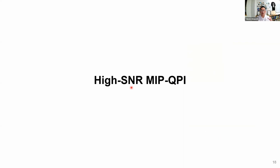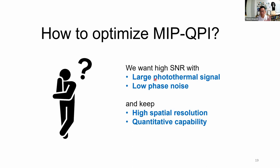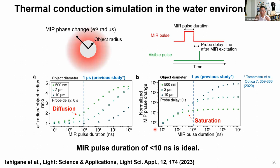Next, I'll discuss how to improve the SNR of the mid-infrared QPI technique. We want higher SNR with large photothermal signal and low phase noise, while keeping high spatial resolution and quantitative capability. To find the optimal condition, we performed thermal conduction simulations. We assumed small objects of 500 nm, 2 μm, and 10 μm diameter, illuminated with absorbed IR light, and varied the mid-IR pulse duration to find the optimum.